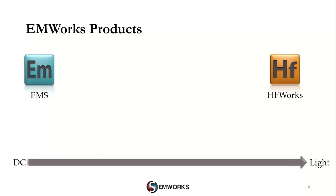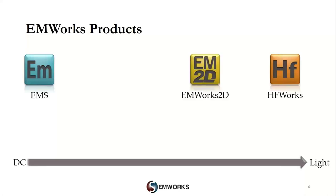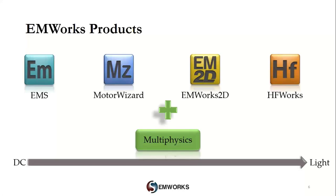Our second product is HFWorks, which is used for electromagnetic simulation of RF, microwave, high-frequency, and high-speed electrical and electronic devices. It covers applications including a wide range of antennas, resonators, filters, connectors, waveguides, etc. Our third product is EMWorks2D, which offers static analysis and covers simulation of planar and axisymmetric geometries. Our latest addition is Motor Wizard, a template-based motor design software offering analytical and finite element analysis of BLDC motors. We also offer multi-physics add-ons like thermal, motion, linear statics, and circuits.